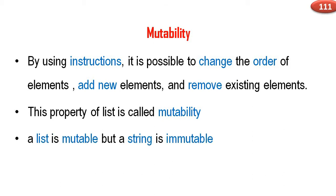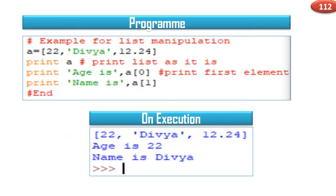A list is mutable but a string is immutable. Let us consider an example — a program for list manipulation.